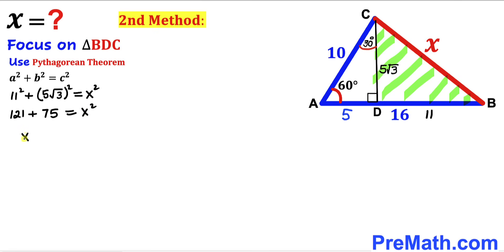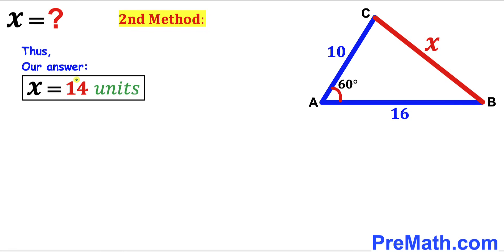Therefore x² = 196. Taking the square root on both sides, x = 14 units. So our answer is confirmed: x = 14 units using the second method as well, and that is our final answer.